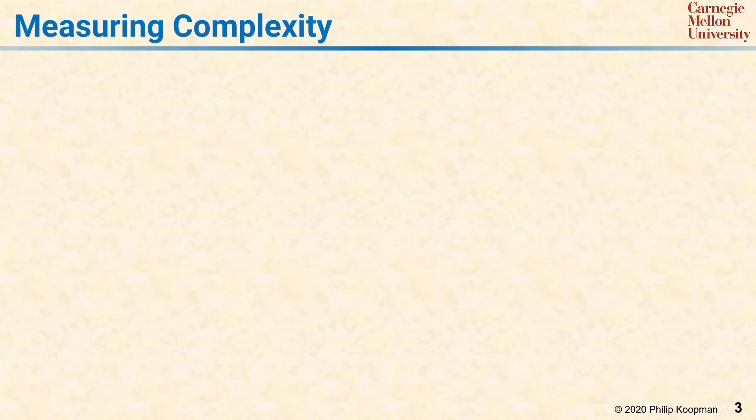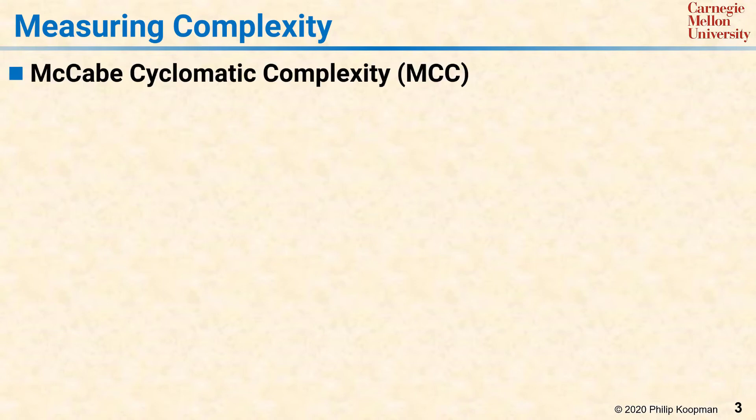If we want a consistent way of reducing complexity, it's really helpful to have a way to measure it. McCabe Cyclomatic Complexity, abbreviated MCC, is a well-known way to measure the complexity of software and determine whether that software is spaghetti code.